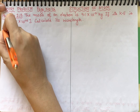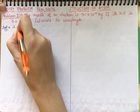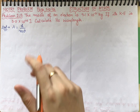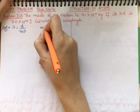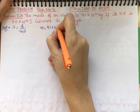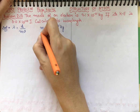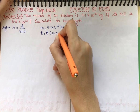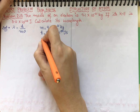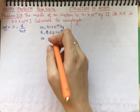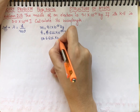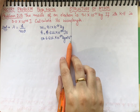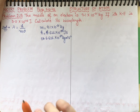To find the wavelength, we use the de Broglie relation: λ = h / (mv). We have the mass given and Planck's constant, whose value is 6.626 × 10⁻³⁴ kg·m²·s⁻¹. So mass is 9.1 × 10⁻³¹ kg and Planck's constant is 6.626 × 10⁻³⁴ kg·m²·s⁻¹.